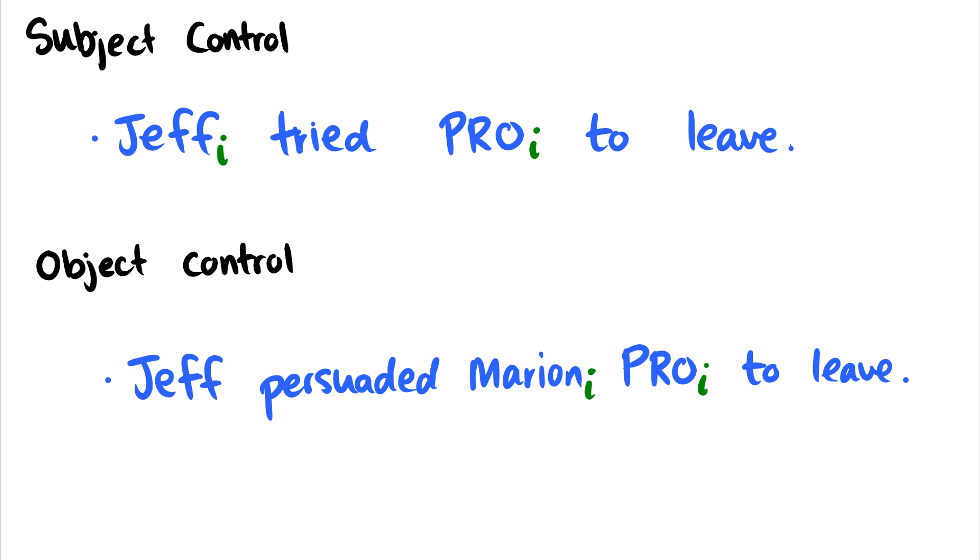Now there's two types of control. There's subject control, where the subject controls what PRO is doing, so Jeff tried to leave, where Jeff is the trier and the leaver. And there's also object control. Jeff persuaded Marion to leave, in which case Marion is the one being persuaded, and Marion is the one leaving. So we can see these are two different types of control.